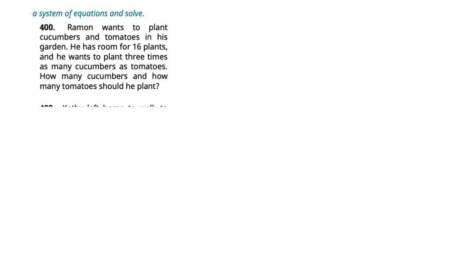Owen wants to plant cucumbers and tomatoes in his garden. So let's let C equal cucumbers. Oops, I can't spell cucumbers and it's right there. And tomatoes, let T equals tomatoes.